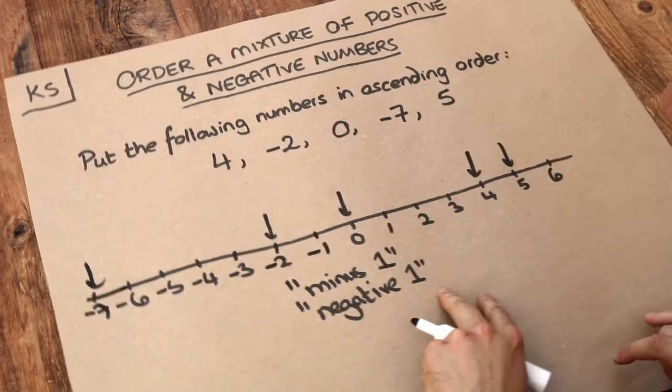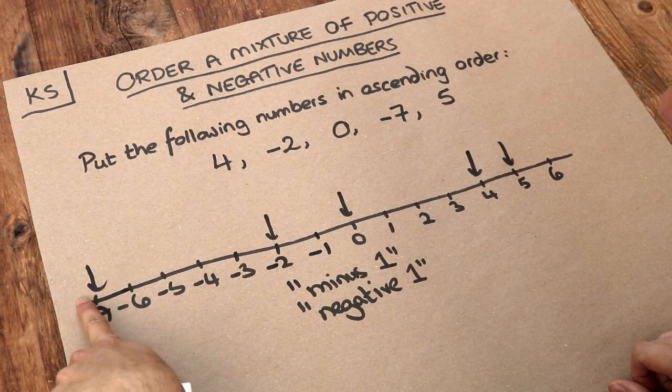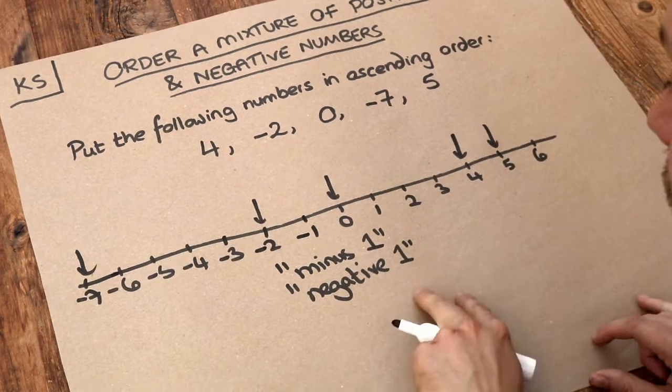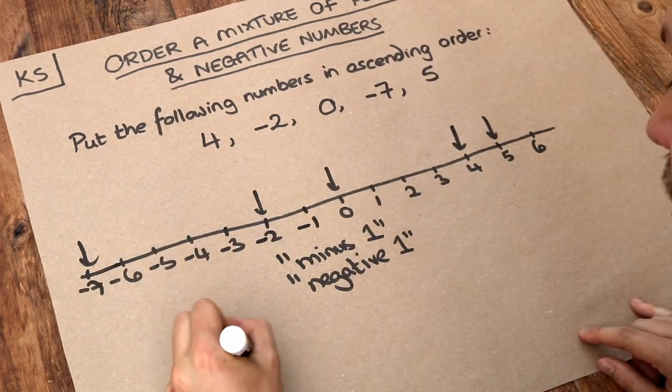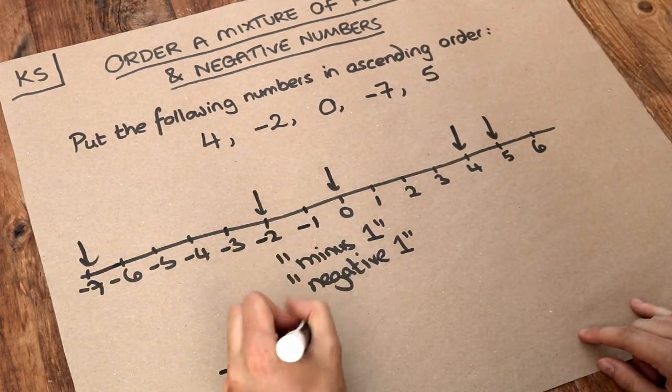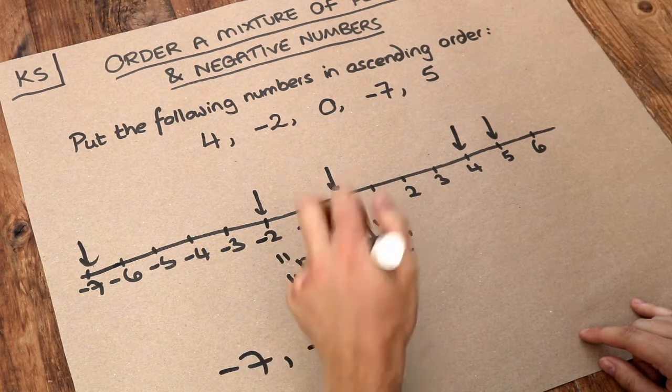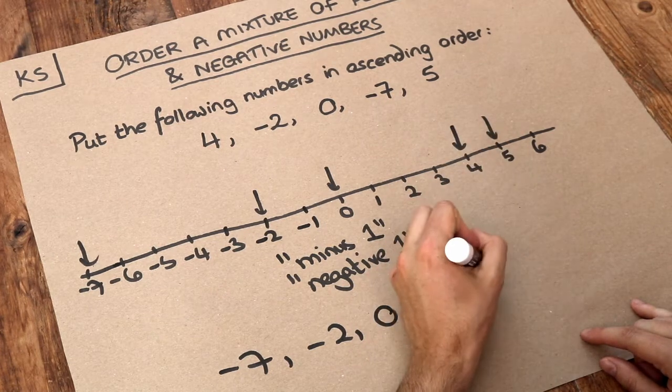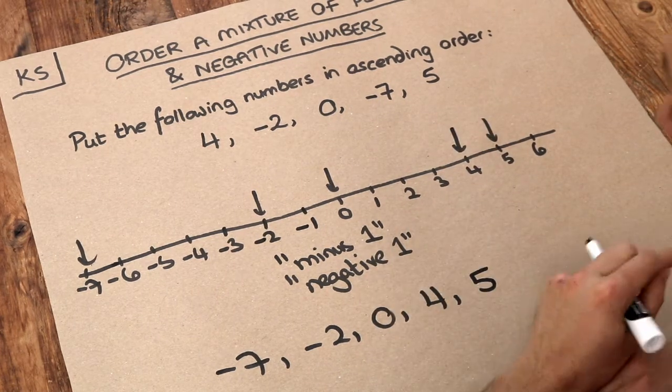Now, if we put them in ascending order, that's in order from smallest to largest, that's the smallest here going to the largest here. So minus seven is the smallest, then minus two, then zero, then four, and then five. And that's the numbers in ascending order.